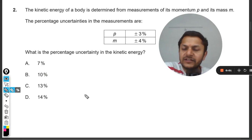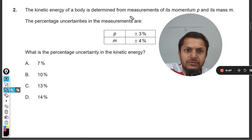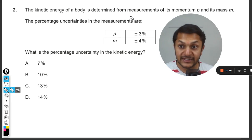Our curious students, let us see what is there in this question. The kinetic energy of a body is determined from measurements of its momentum p and mass m. The percentage uncertainties in the measurements are given: for momentum it is plus minus three percent and for the mass it is plus minus four percent. What is the percentage uncertainty in the kinetic energy?